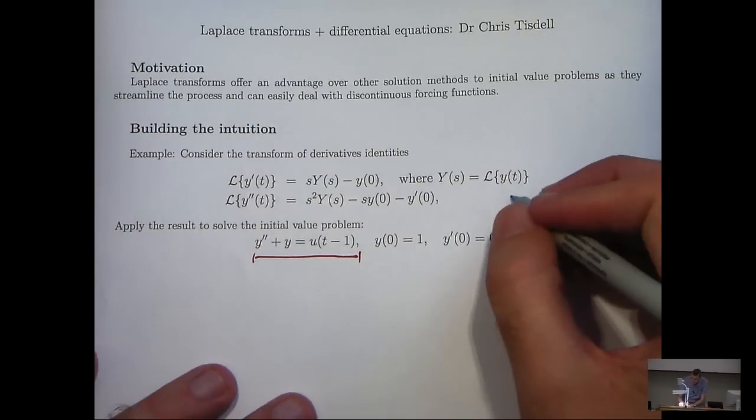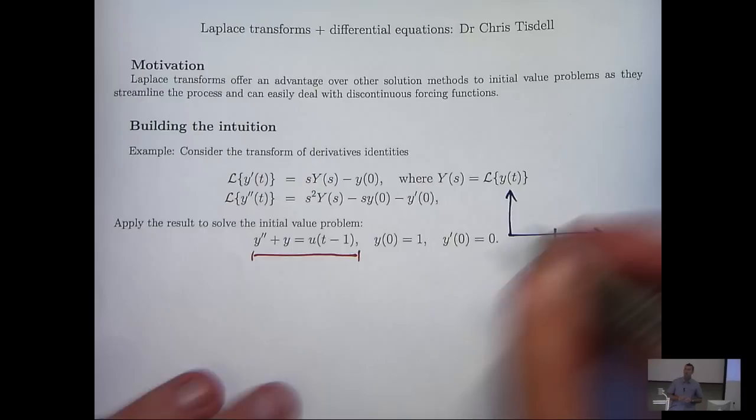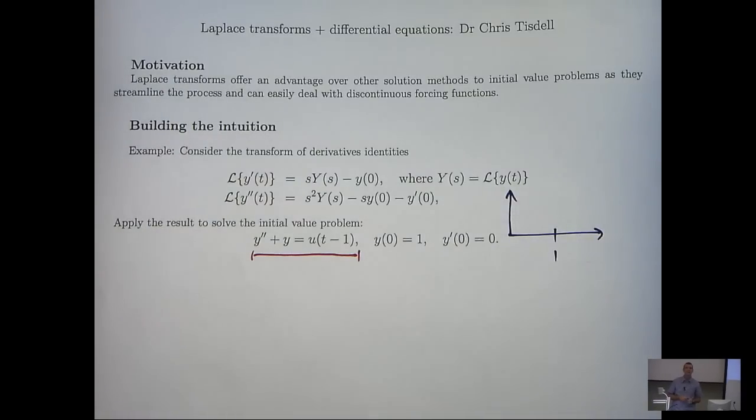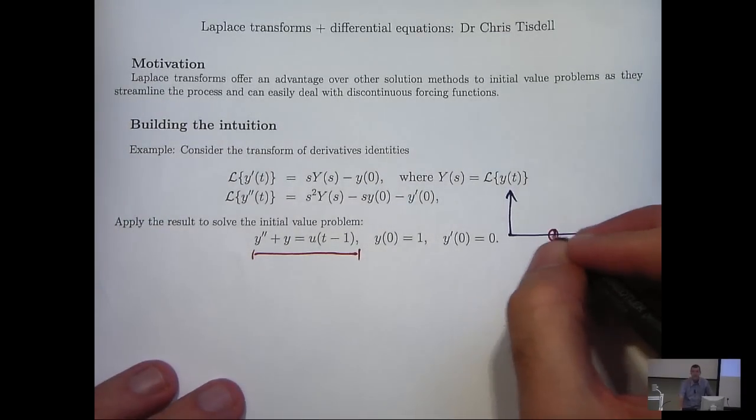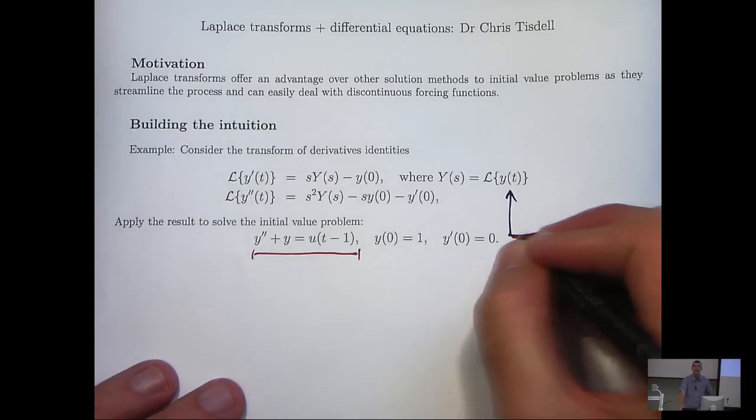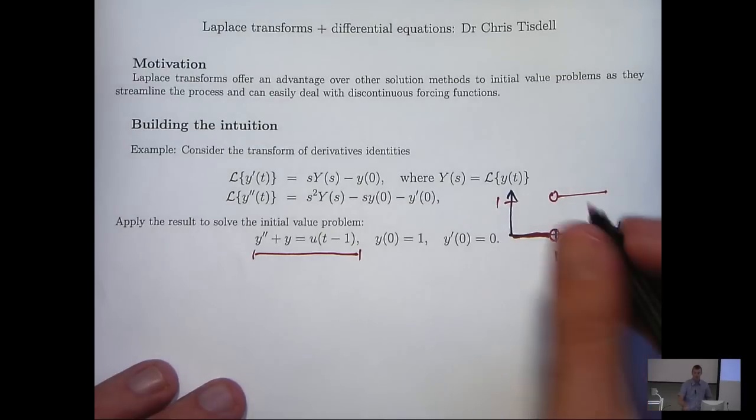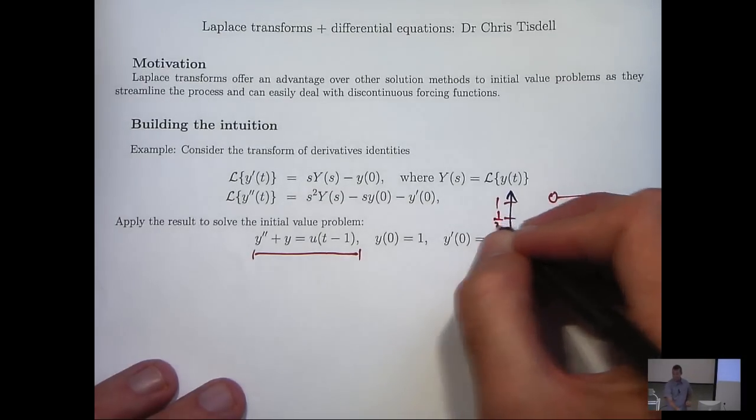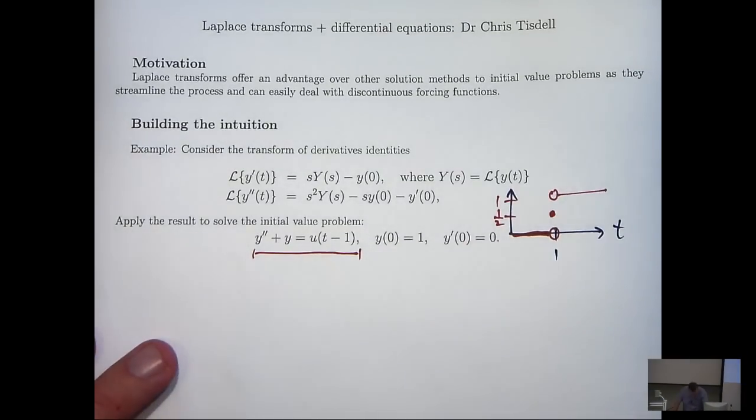Now the heaviside step function is a discontinuous function, and in this case the jump occurs at t equals 1. So to the left of 1 the function on the right hand side is just 0, to the right of 1 the function is 1, and at 1 the function is 1/2.